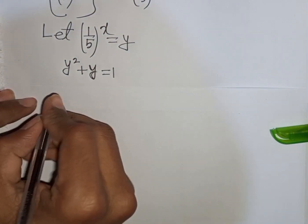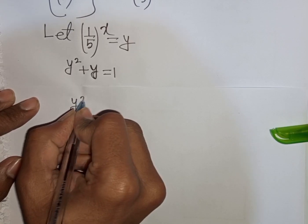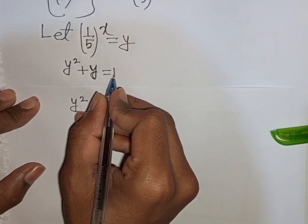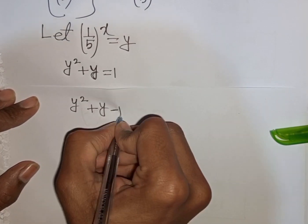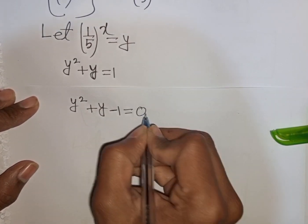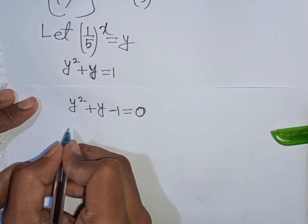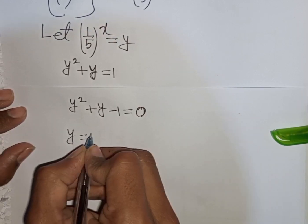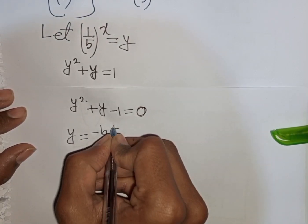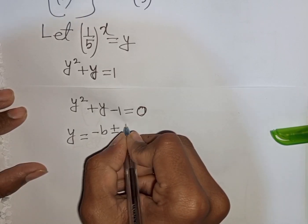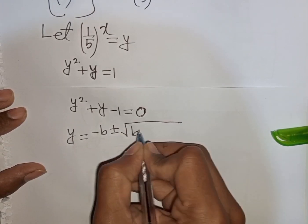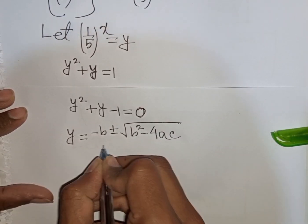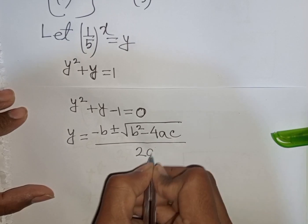Rearranging, we get y squared plus y minus 1 equals 0. Now we apply the quadratic formula: y equals negative b plus or minus square root of (b squared minus 4ac) divided by 2a.